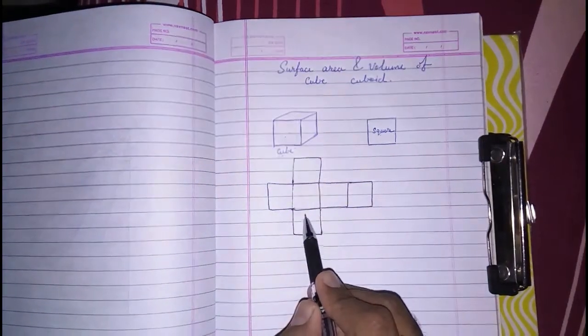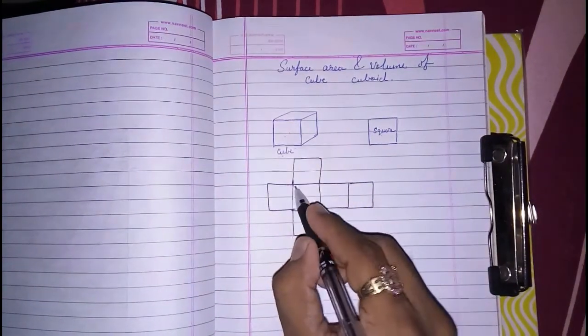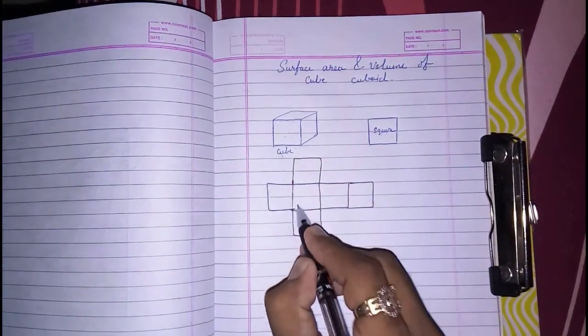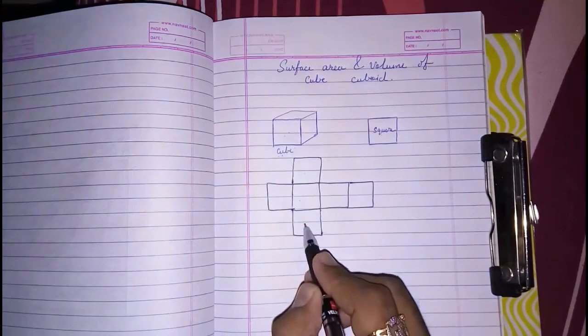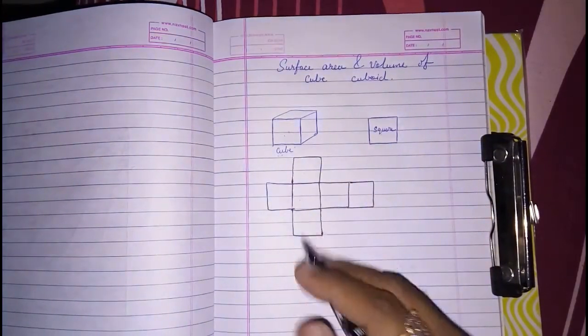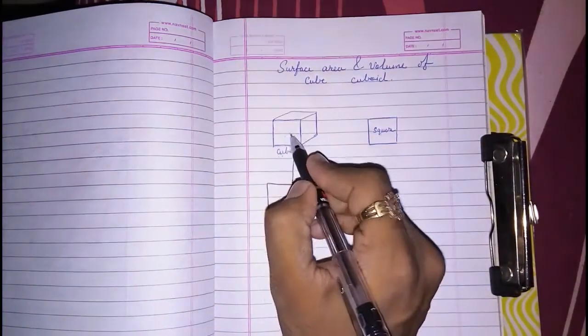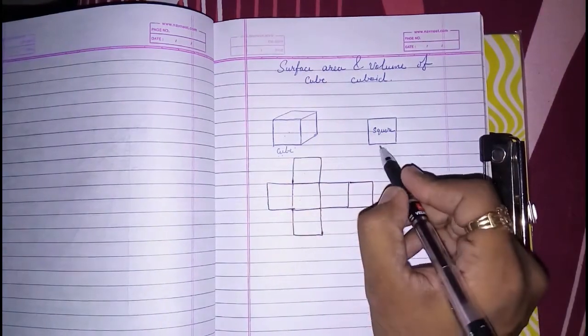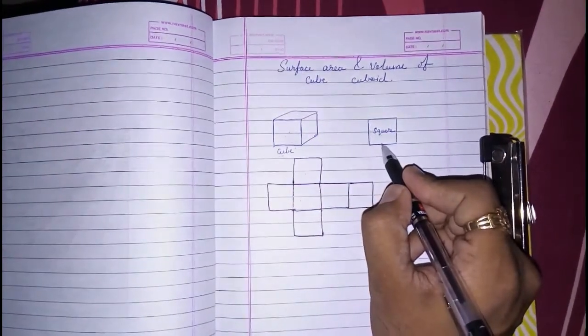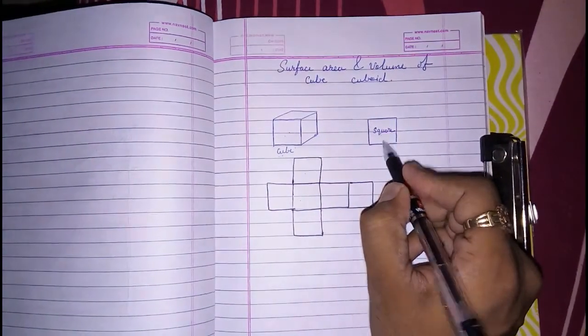This is the net of the cube. You can see these are the four walls, this is the upper side, and this is the lower side. If we fold it we will get a cube.